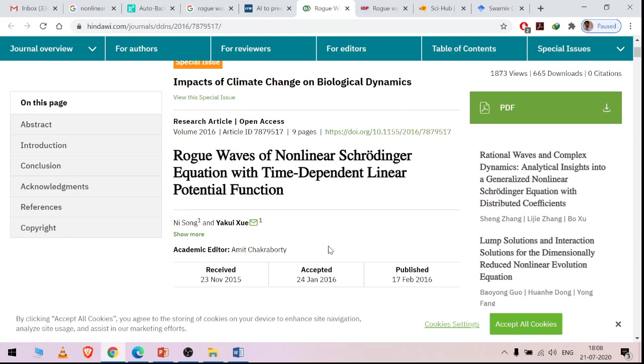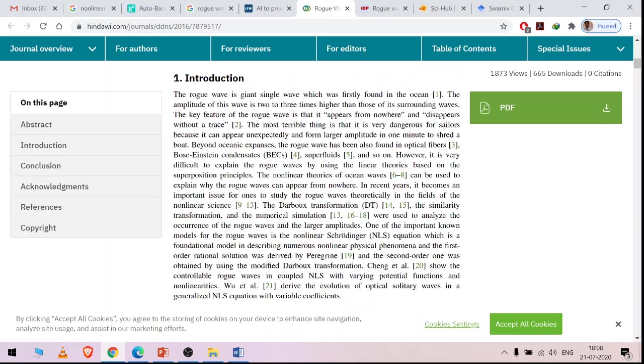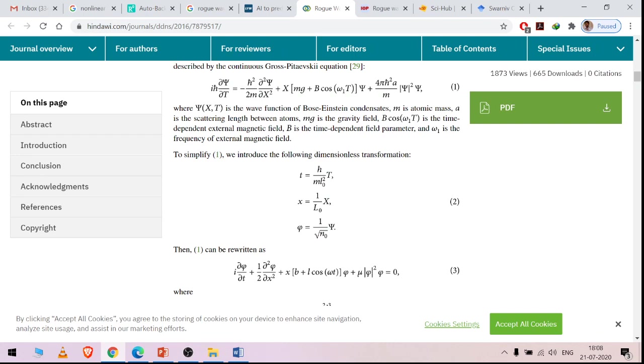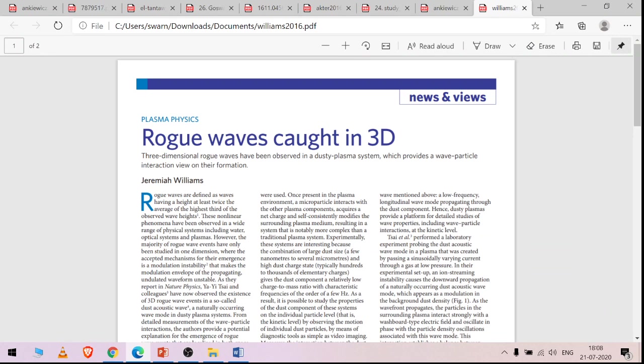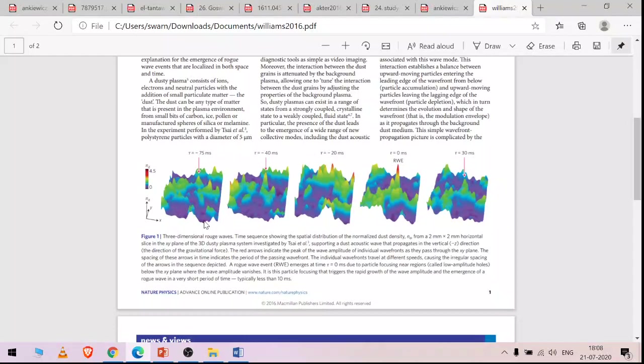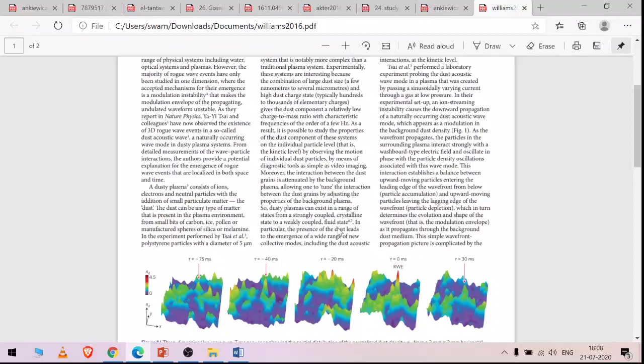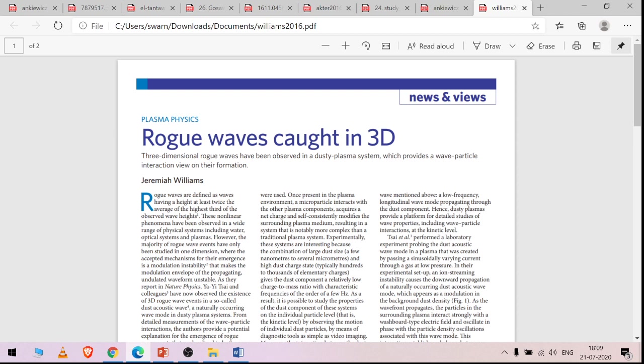For that I will send some of you some papers which are related to rogue waves and are freely available. In Nature journal they have reported rogue waves in 3D, visible out here. This paper is also available—three-dimensional rogue waves have been observed in dusty plasma systems. As I have said, those of you who have already done KdV or dispersion relations on dusty plasma systems—